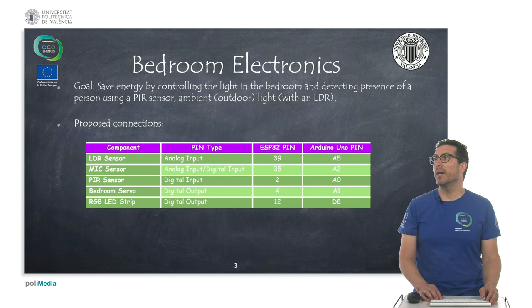These are the electronics we use for the bedroom: an LDR sensor, a mic, a PIR sensor, a servo, and also the RGB LED strip.